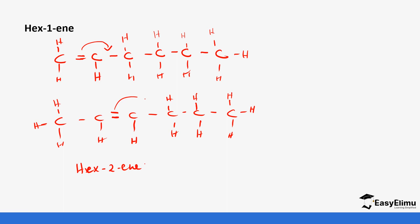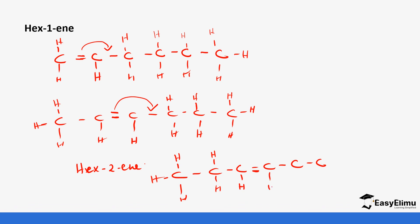We can move the double bond one more position, giving six carbons with the bond now at position three. Place the hydrogens accordingly. So this becomes hex-3-yne. You cannot go further than that because if you move the double bond again and come from the other direction you are just repeating yourself. So hexyne has two positional isomers: hex-2-yne and hex-3-yne.